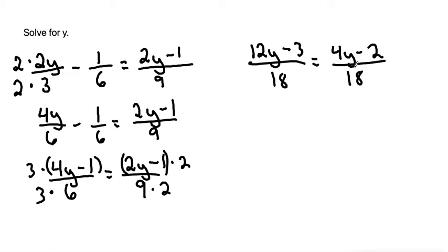Now, once we've gotten the same denominator on both sides, we can basically just ignore it. Or another way to think about it is that we're multiplying both sides by 18, and that cancels these both out and leaves us just with 12y minus 3 is equal to 4y minus 2.